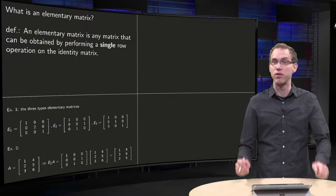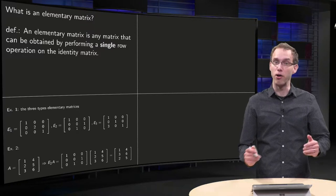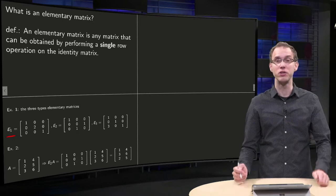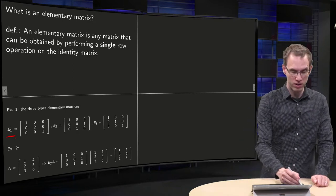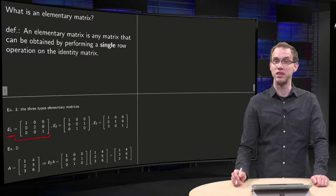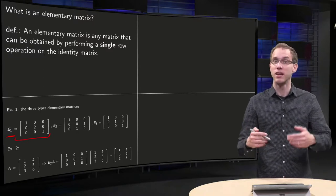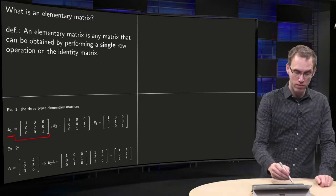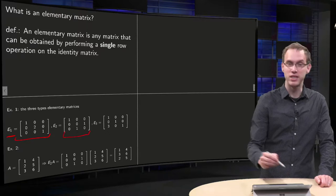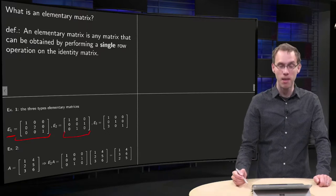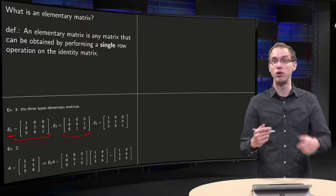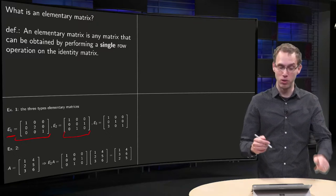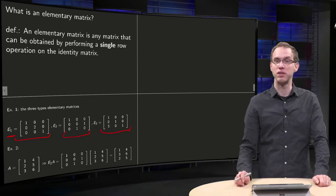Doing this with a 3×3 identity matrix, for example: our first type — multiply a row with a nonzero constant, for example with two — then we get this elementary matrix. Second type — interchange two rows, for example the second and the third row — then we get our second type of elementary matrix. And the third type — add a multiple of a row to another row, for example add three times the first row to the last row — then we get our last type of elementary matrix.